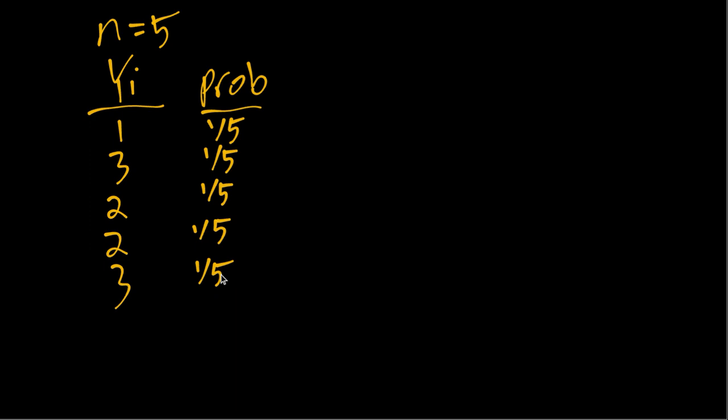And then what we'll notice is that some of these values are repeated, right? We see two in there twice. So we can simplify this. Instead of having two one-fifths, we can just have a single two-fifths. And then similarly for the three is in there twice. So instead of two one-fifths, we'll just sum those together. And we got two-fifths there also.